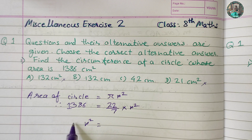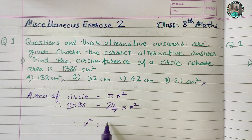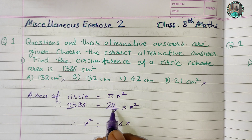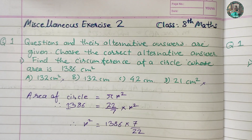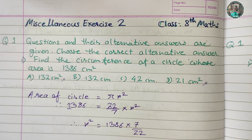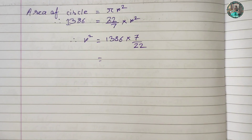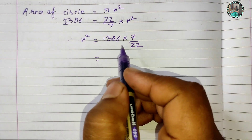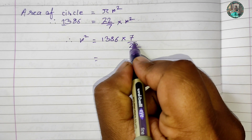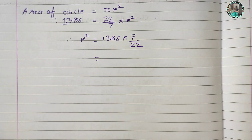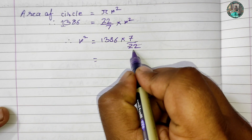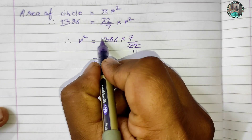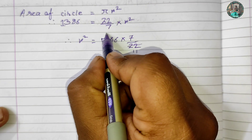The circumference of a circle is πr². Since the area is 1386, we will use this to solve. We will divide to simplify — we have 6.